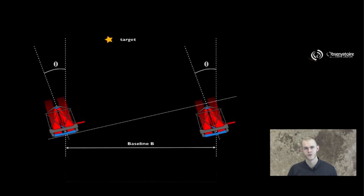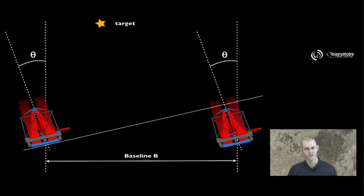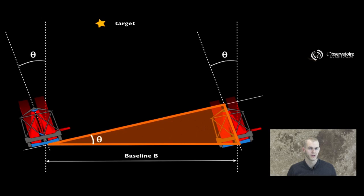We need to go back to a picture you've already seen, that of the two-telescope interferometer pointing at a target that is away from transit, at an angle theta away from transit, a zenithal angle. I want to focus on the yellow triangle that I have highlighted in the picture you see on the screen here.